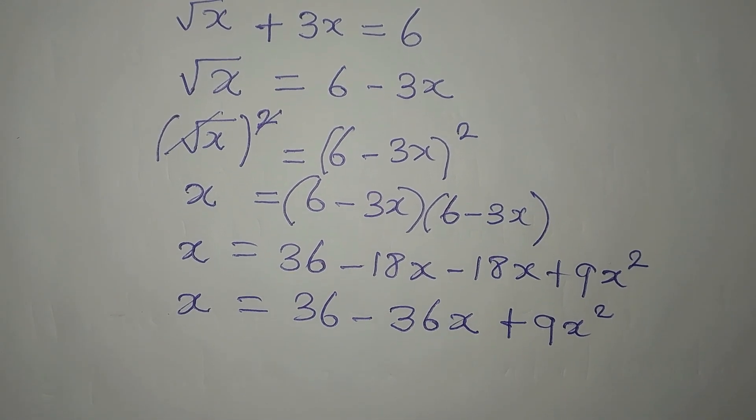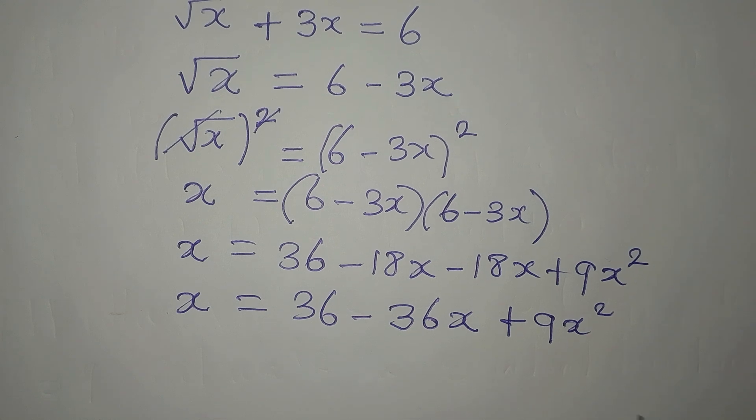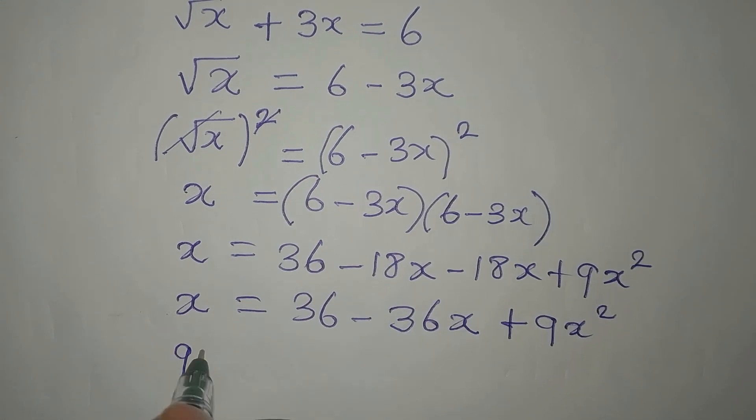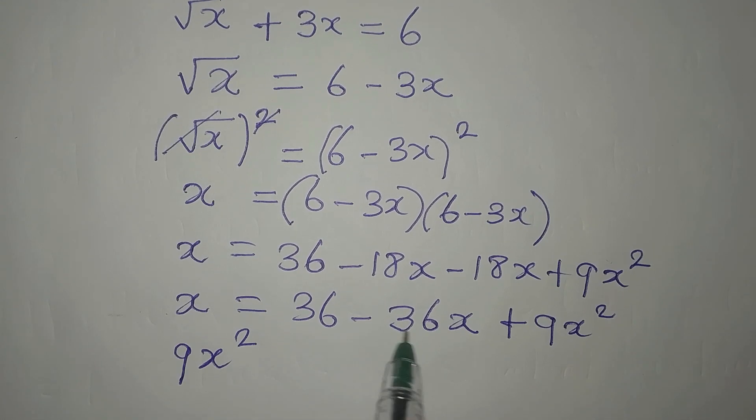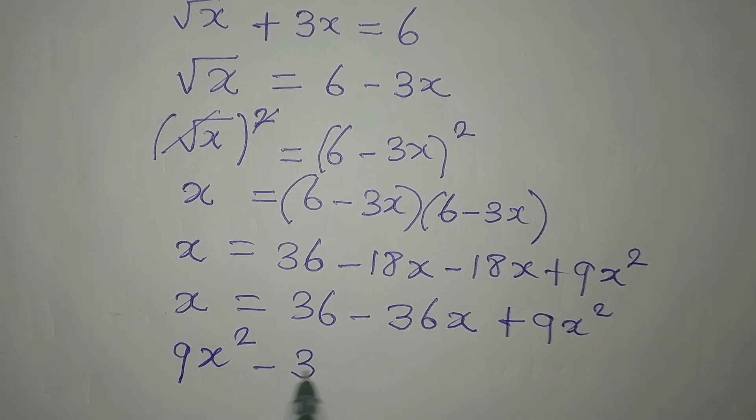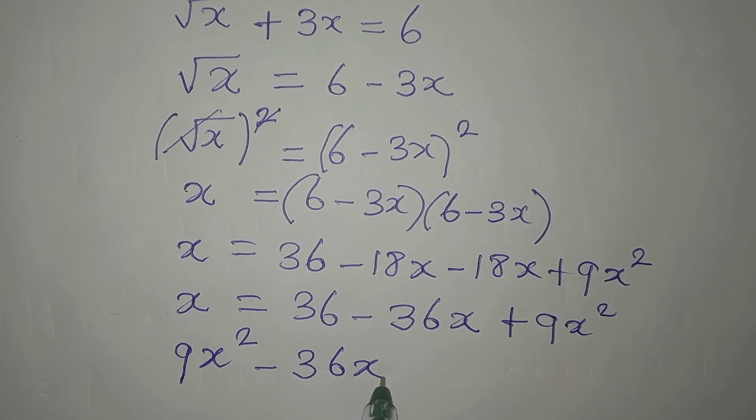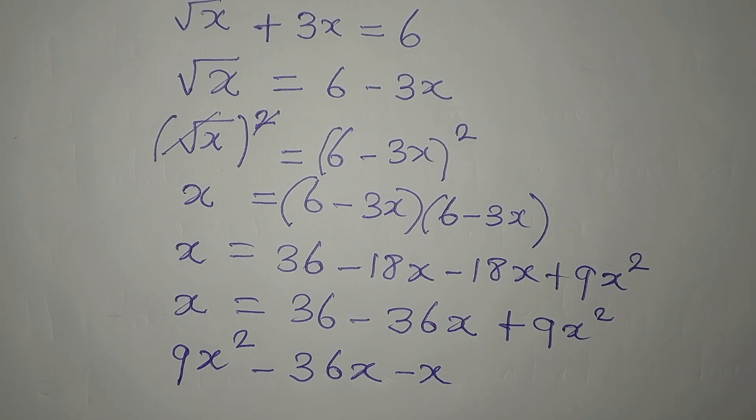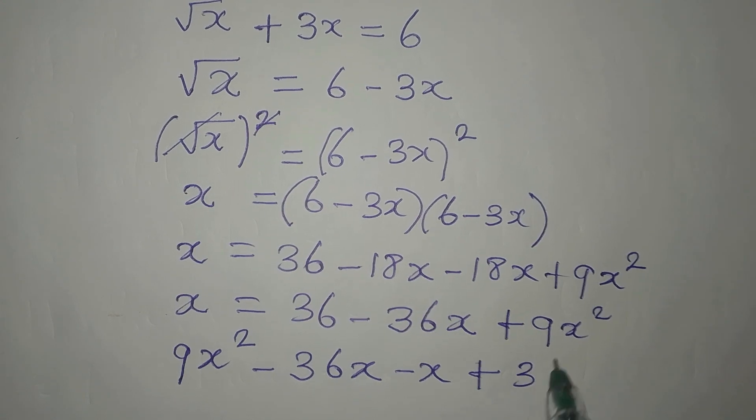Now, let's write the one with the highest power first. 9x squared has the highest power, so I will bring it out, 9x squared. This is minus 36. I'll write it out first. Then this x becomes negative if it comes to the other side.